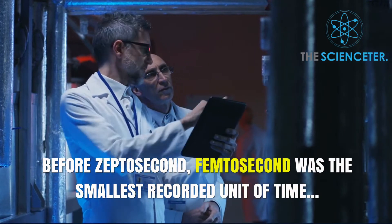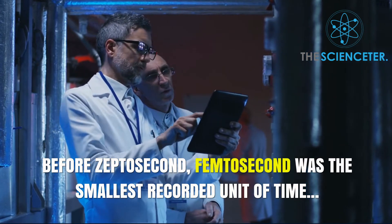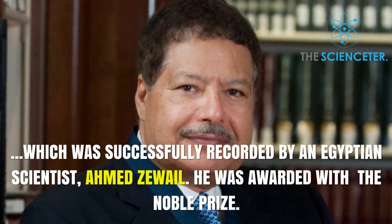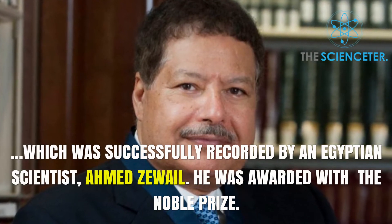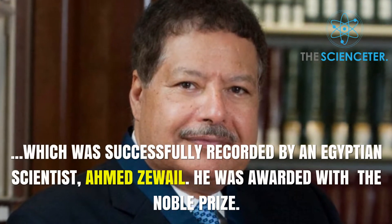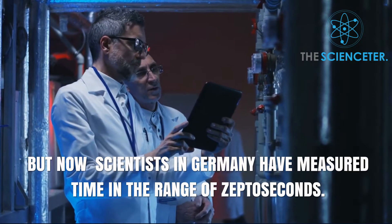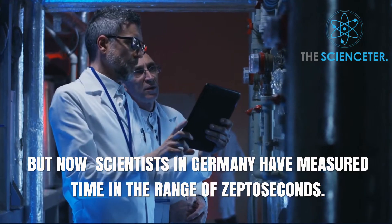Before zeptosecond, femtosecond was the smallest recorded unit of time, which was successfully recorded by Egyptian scientist Ahmed Zewail. He was awarded with the Nobel Prize. But now scientists in Germany have measured time in the range of zeptoseconds.